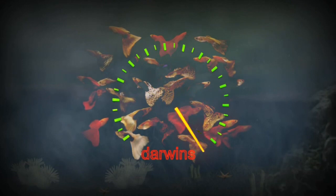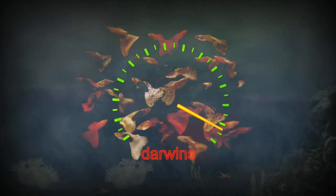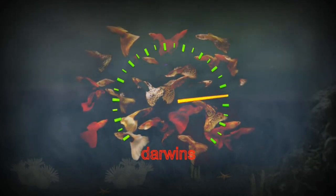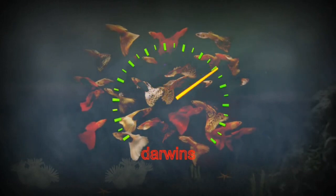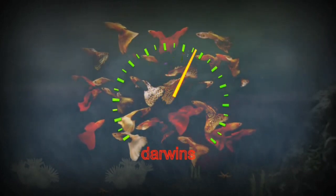A more recent paper evaluating the evolutionary rate in guppies in the wild found rates ranging from 4,000 to 45,000 Darwins.